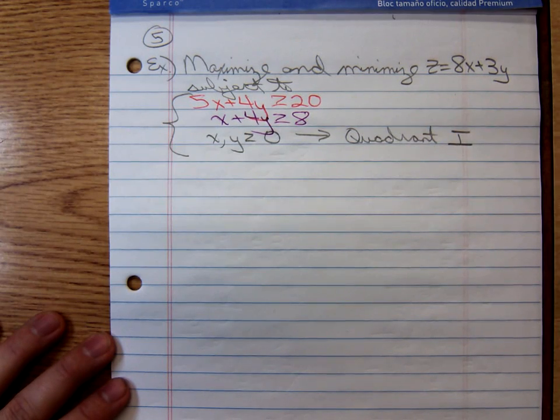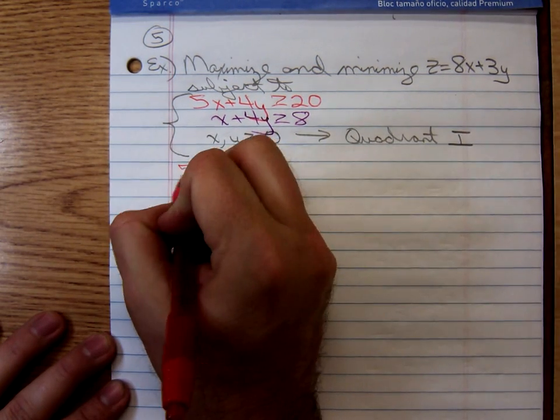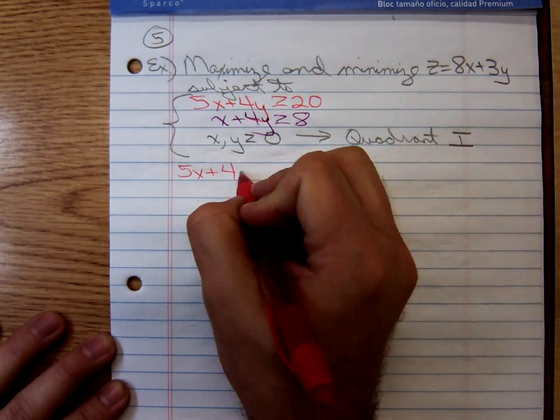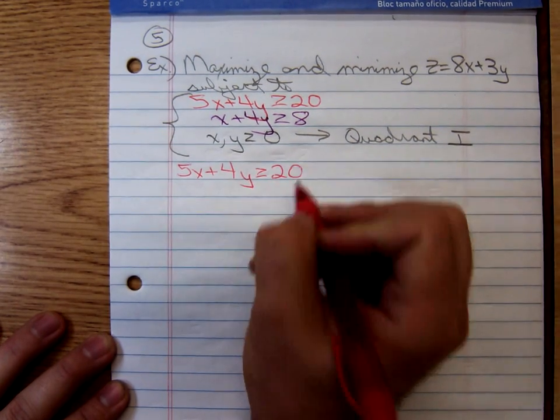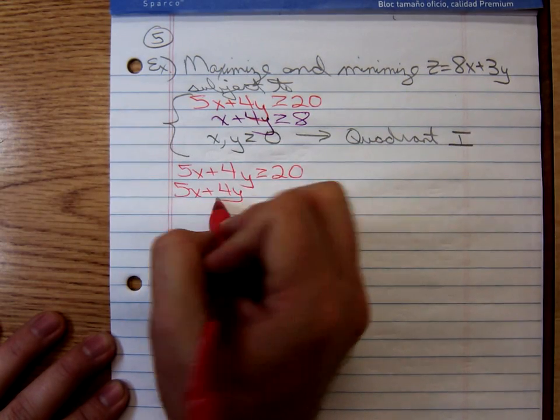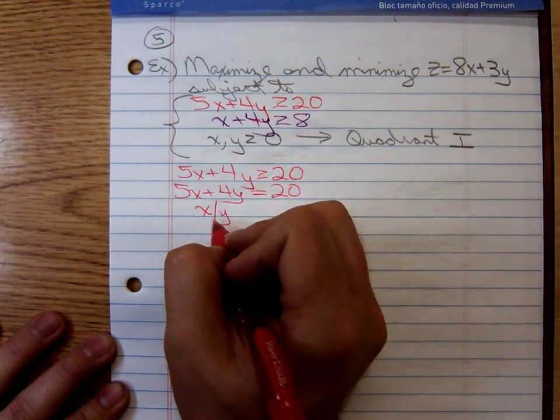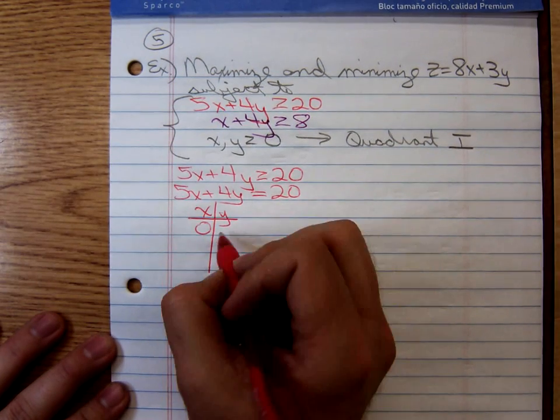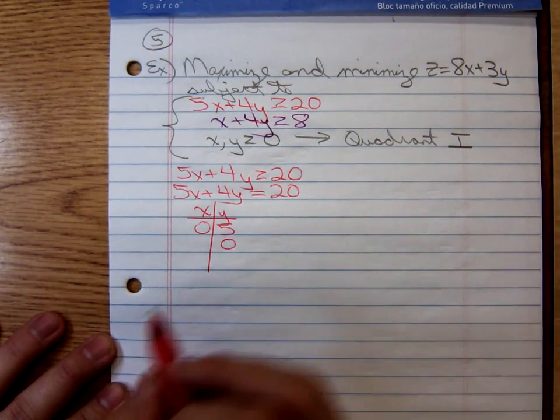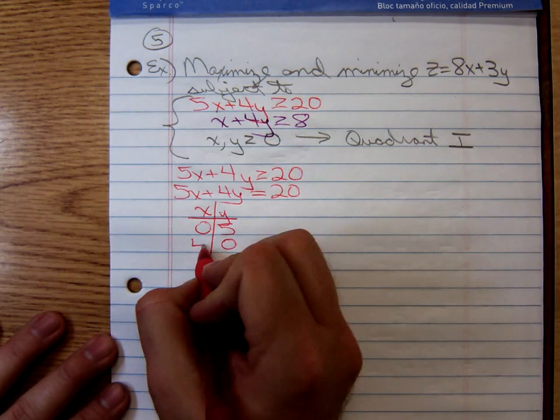First thing we have to do is graph the inequality 5x plus 4y is greater than or equal to 20. That means we need to graph the boundary line 5x plus 4y equals 20. If x is 0, y is 5. If y is 0, x is 4.